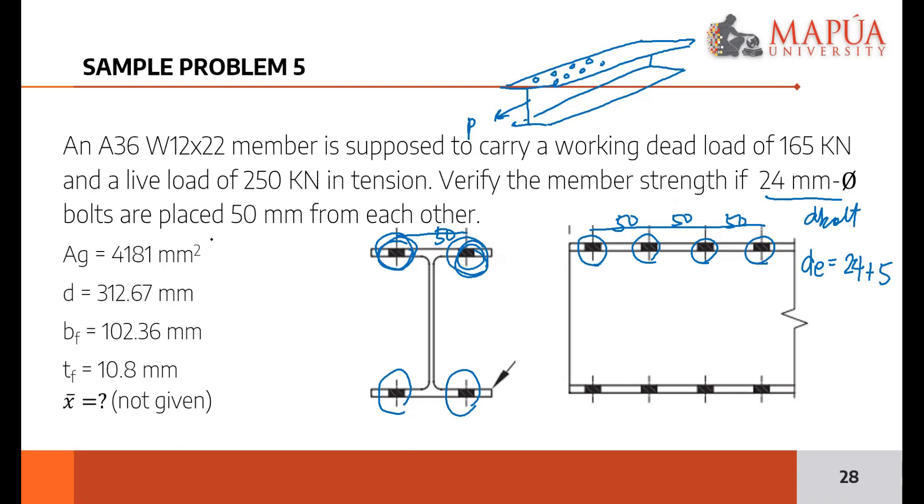So the properties were given: the gross area, thickness, flange BF, depth, etc. The X-bar here will be used later to get capital U, the shear lag factor, that 1 minus X-bar over L. But X-bar was not given, so how do we determine X-bar to get capital U later? We'll see.